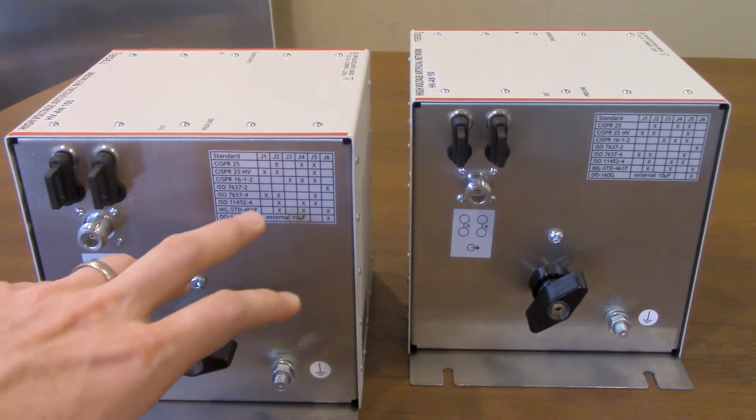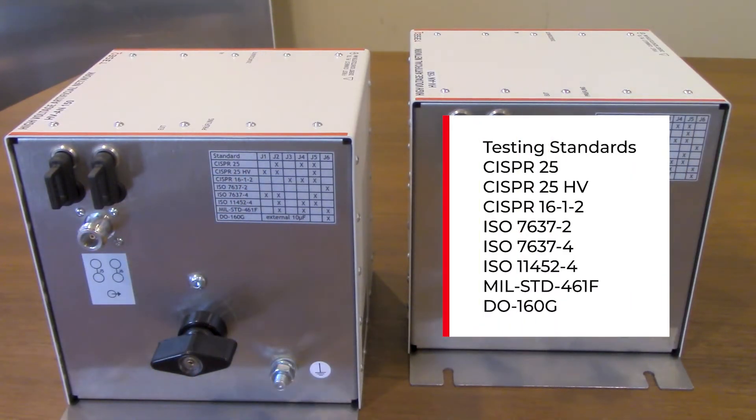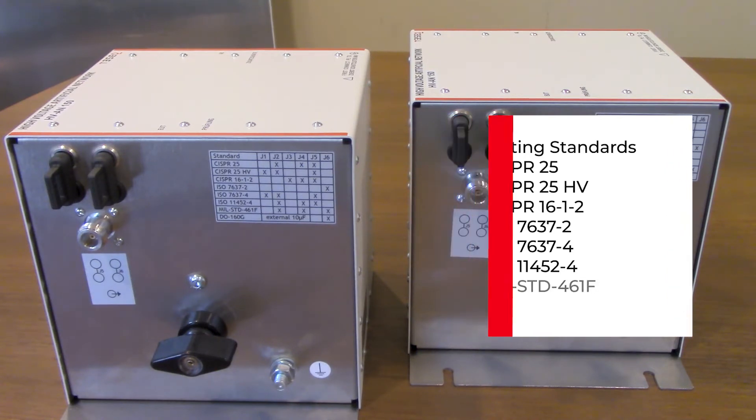So taking a look here you will see CISPR 25 low voltage, following that the high voltage CISPR 16-1-2, ISO 7637-2 and 4, ISO 11452, MIL standard 461 as well as avionics testing for DO160 with the 10 microfarad capacitor.